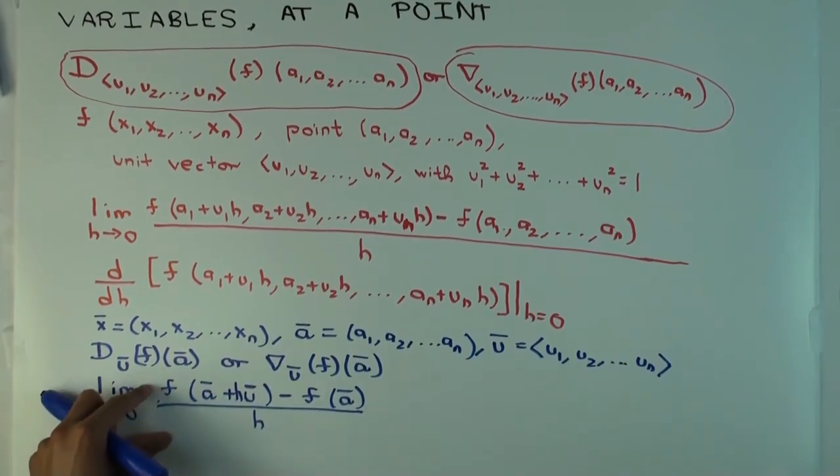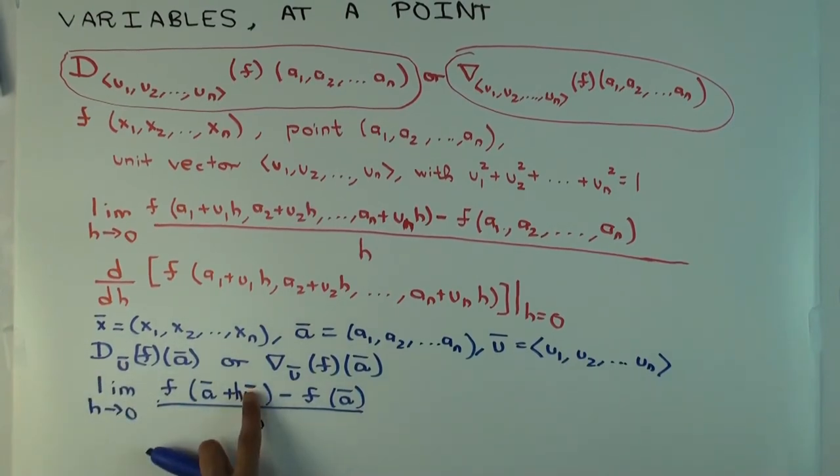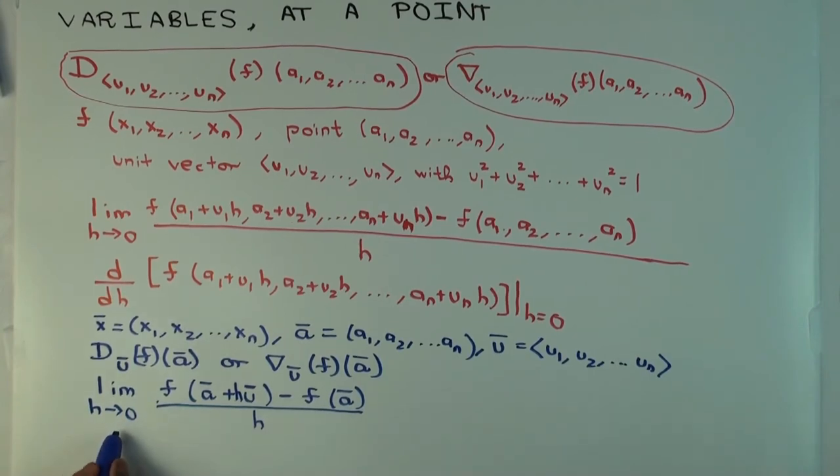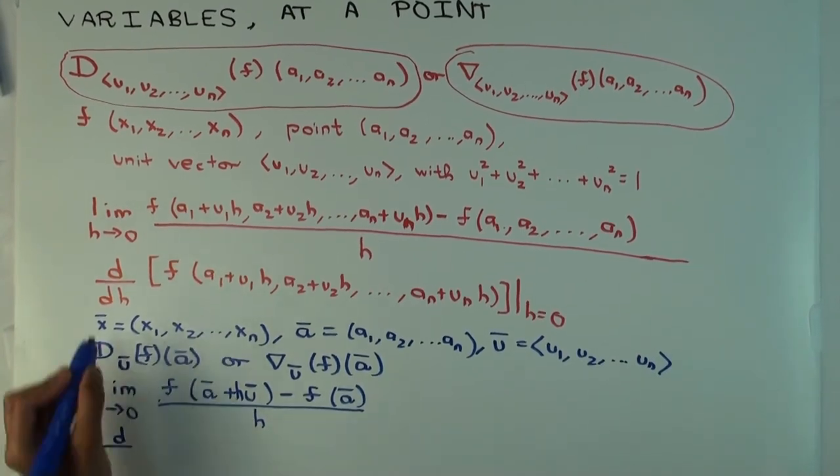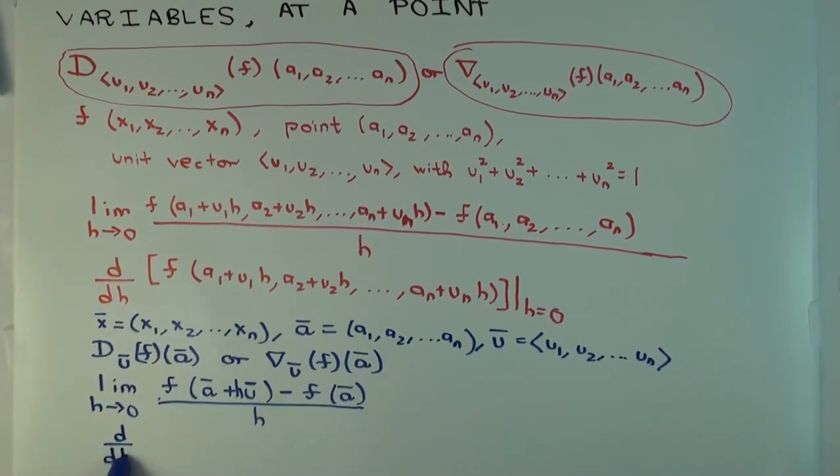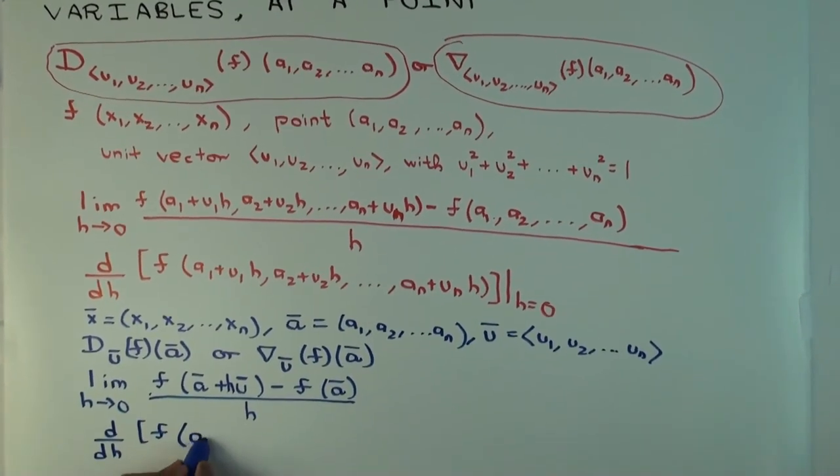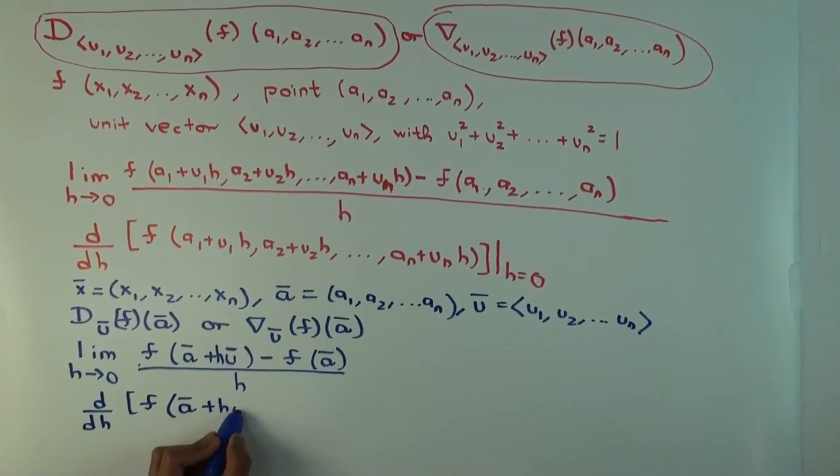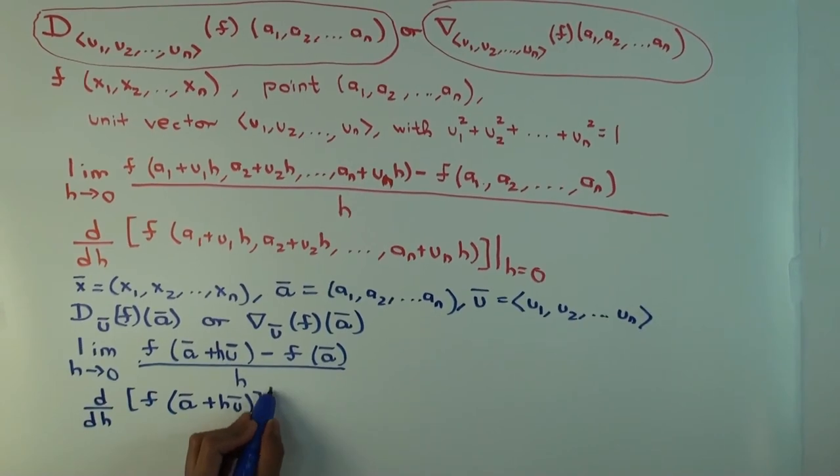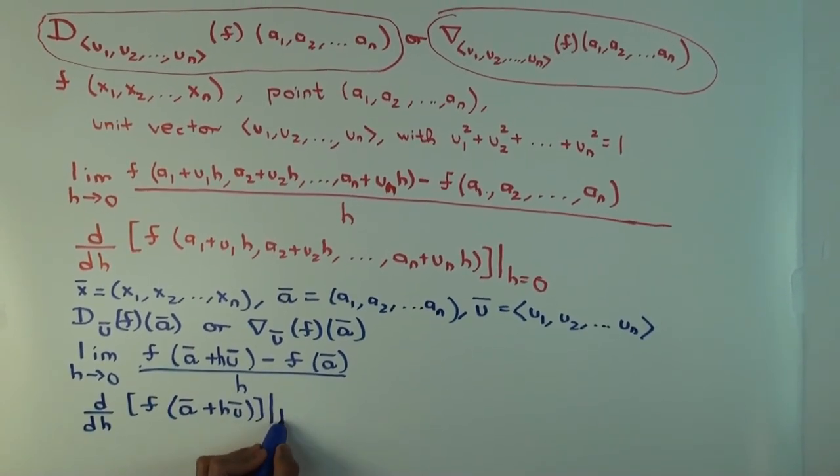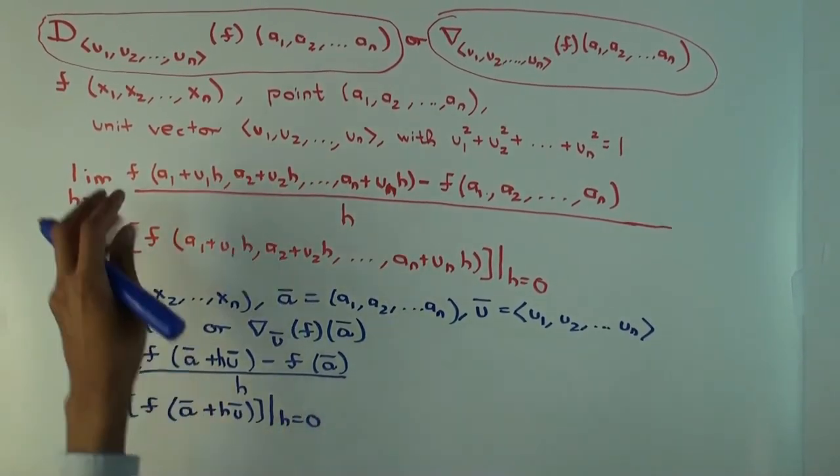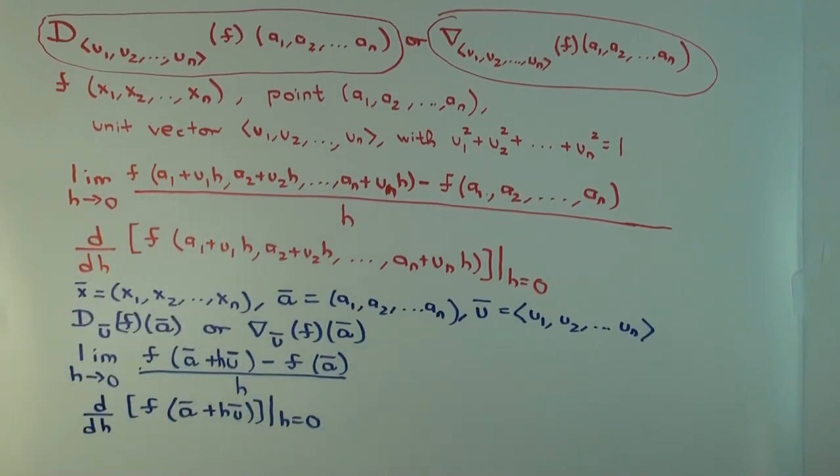So now this actually looks a lot closer to the single variable thing. If you want to write it in the d/dh notation, what does it become? This thing, what does that become? d/dh of f of ā plus hū evaluated at h equals zero. So the vector notation actually makes it much more compact. You can see what's happening.